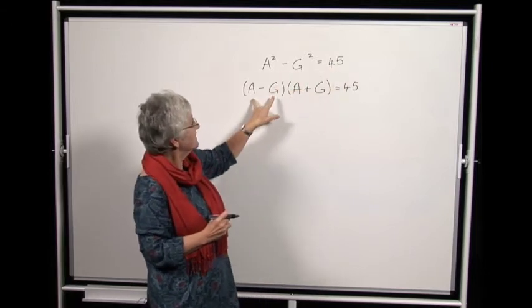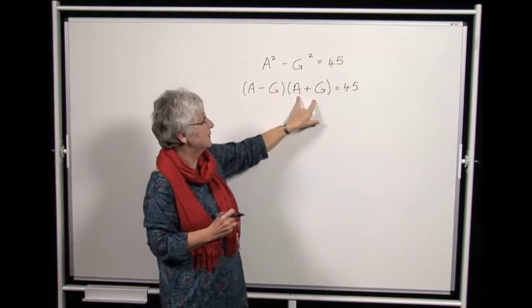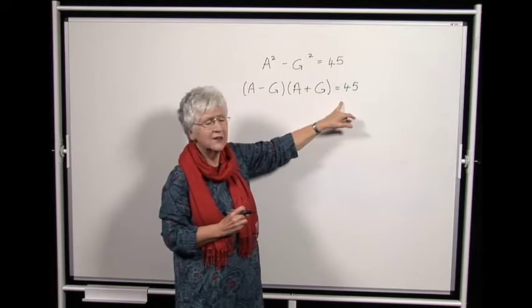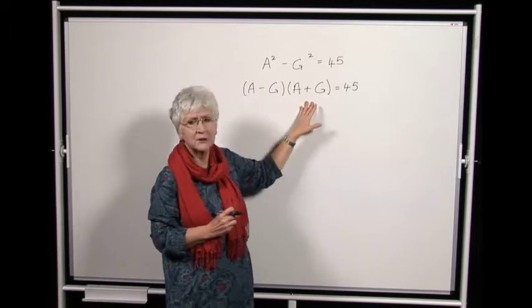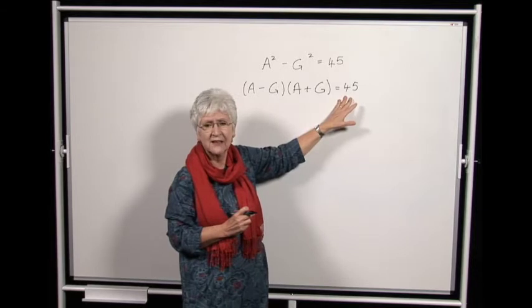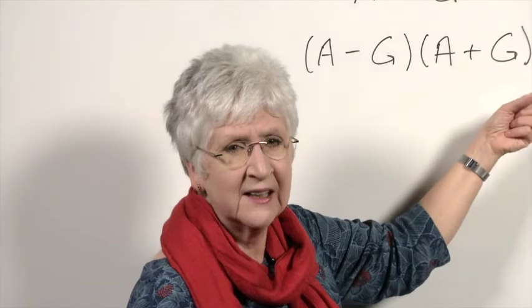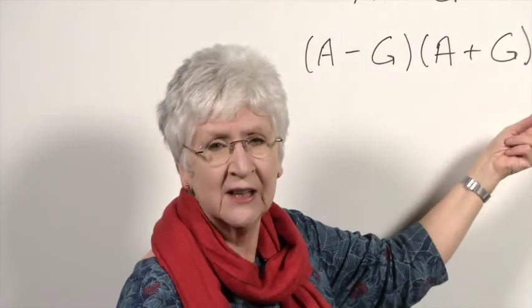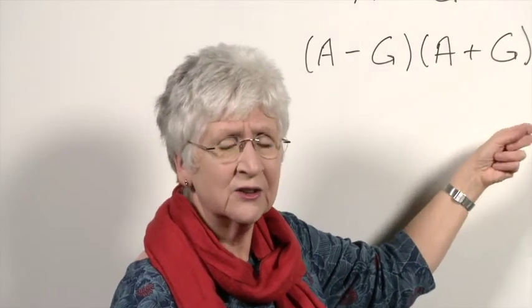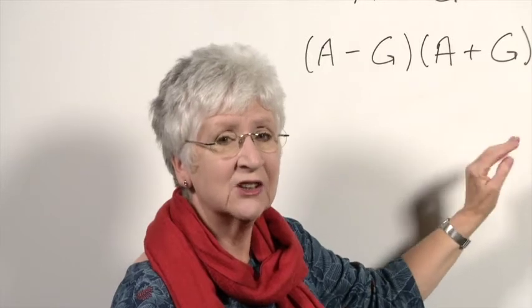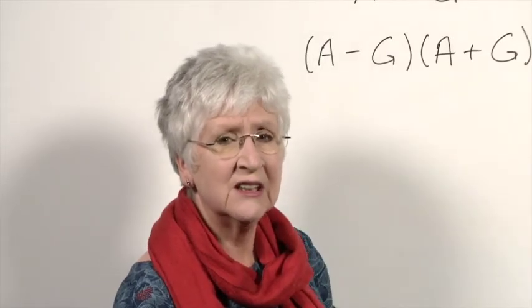Now this factorizes into A minus G times A plus G equals 45. So we're looking for two numbers which multiply together to make 45. Now there are many of these, for example 10 and 4.5, or 18 and 2.5. But in this question we are only interested in integers, so that makes life much easier.